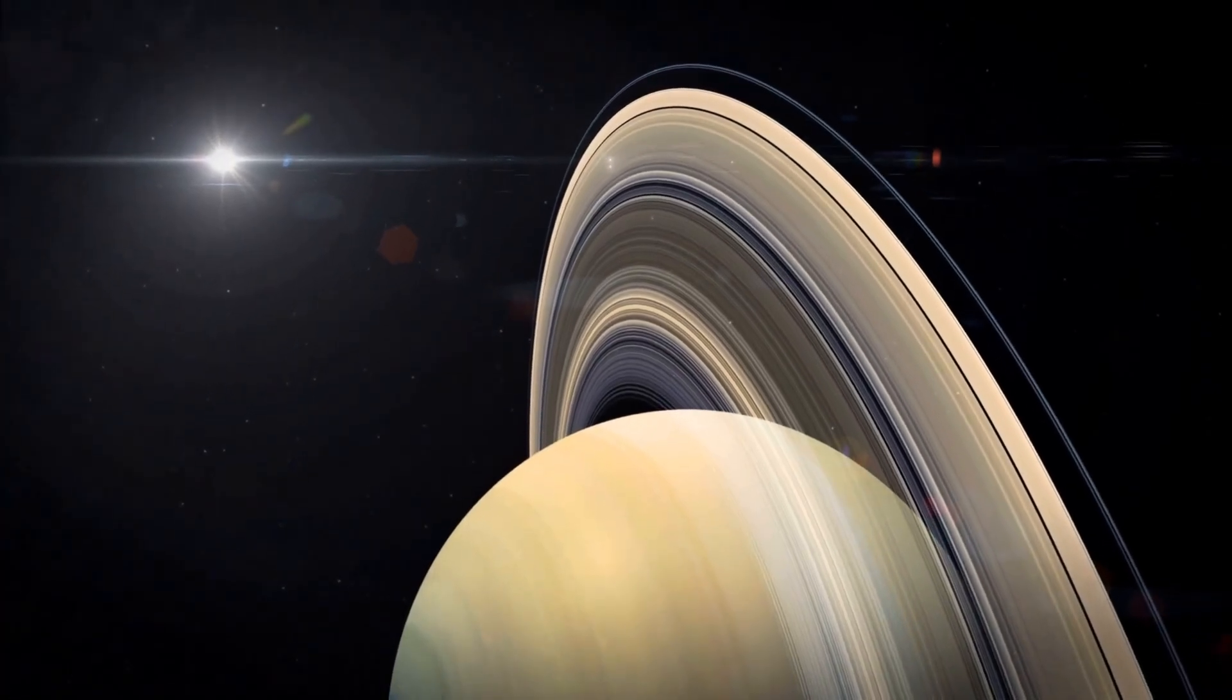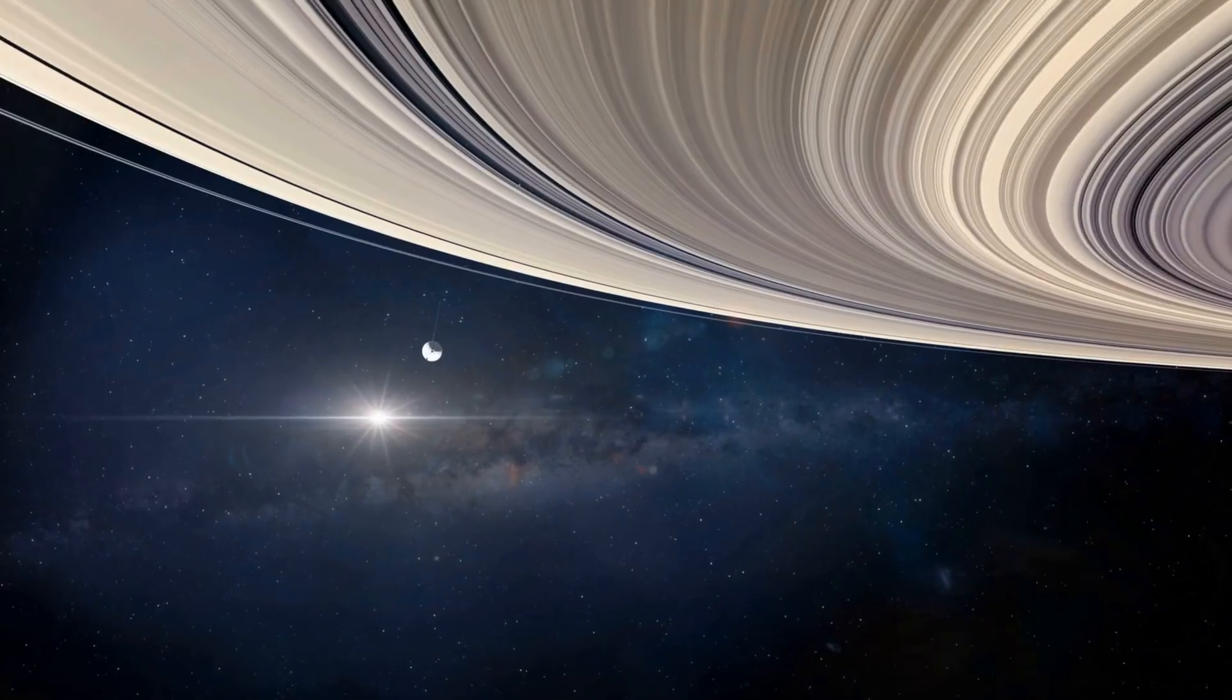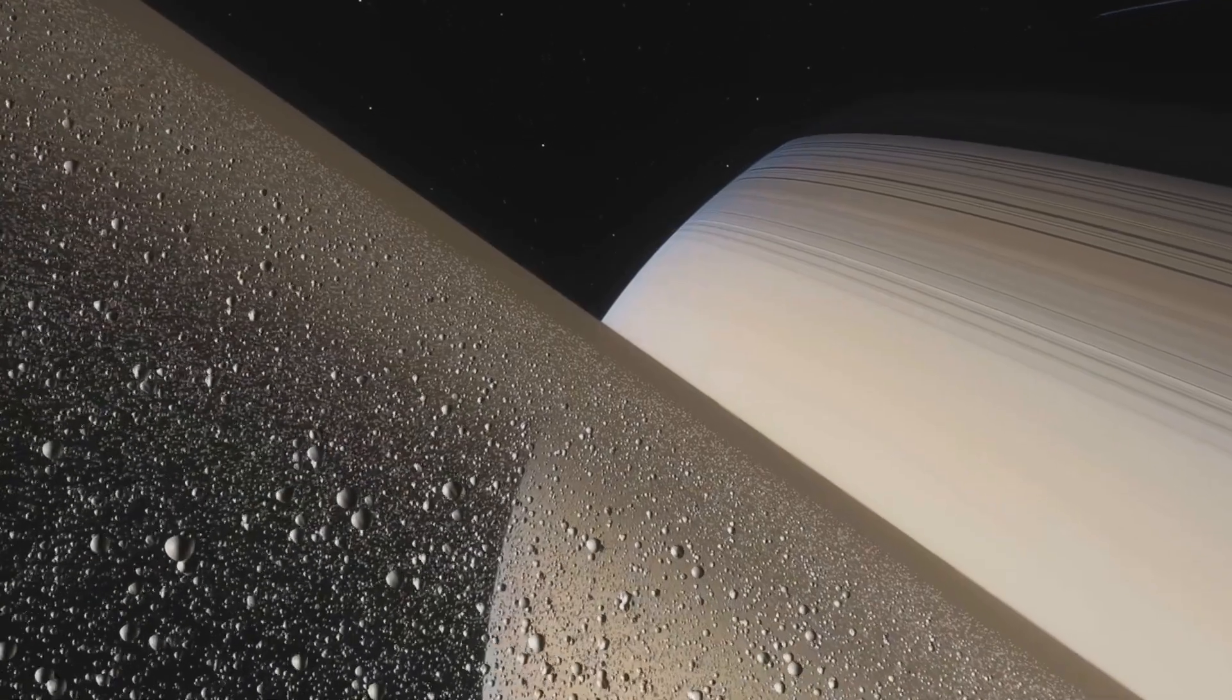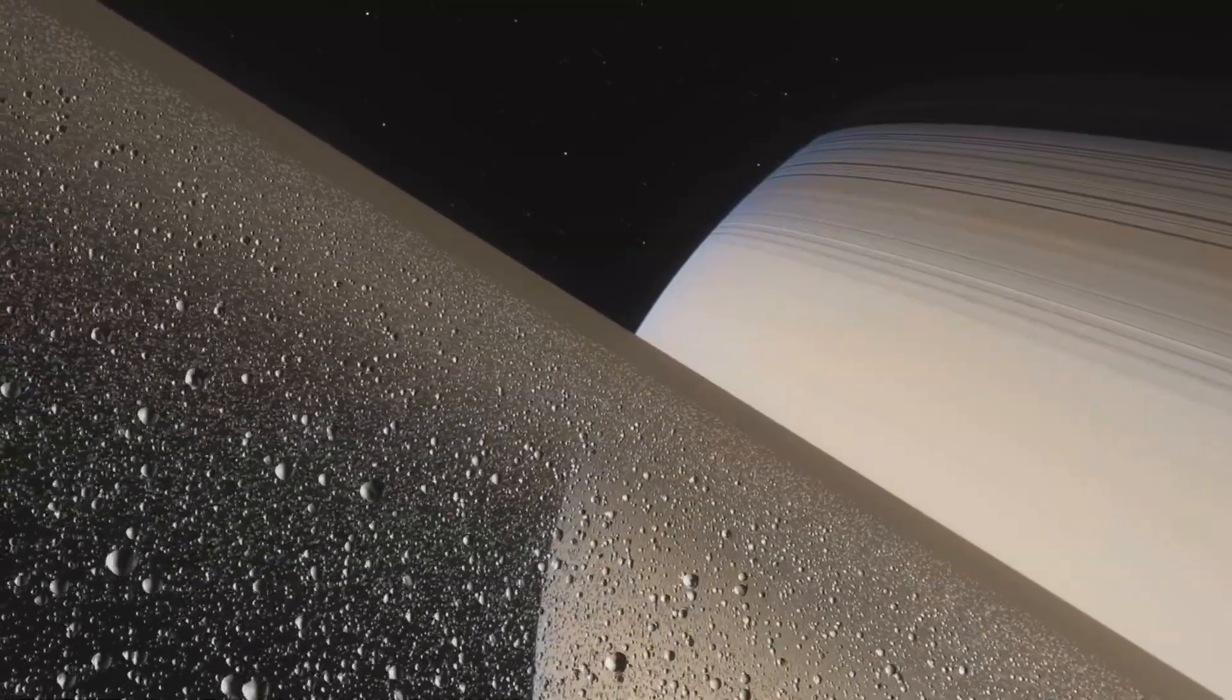By November 1980, the probe had reached Saturn. Its images revealed the breathtaking complexity of the planet's rings, countless ringlets, gaps, and the hauntingly beautiful F-ring.